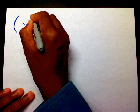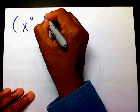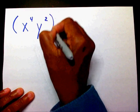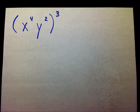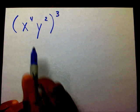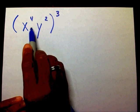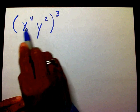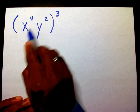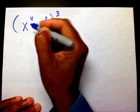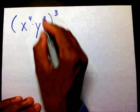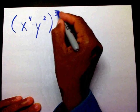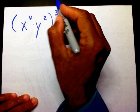If I had x to the 4th, y to the 2nd, raised to the 3rd power. The reason why it's called the product to power rule is because these two bases are being multiplied. This x to the 4th is being multiplied times this y to the 2nd, but the product of this is being raised to a power. That's why it's called the product to power rule.